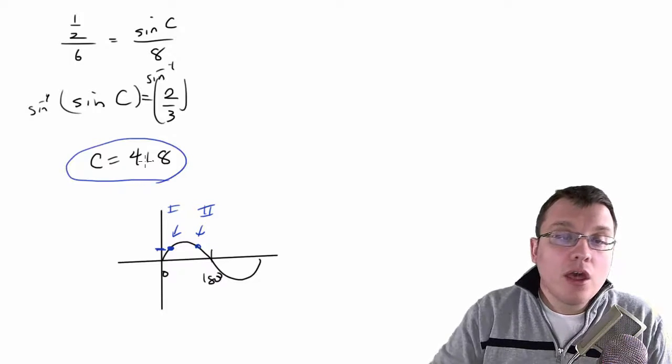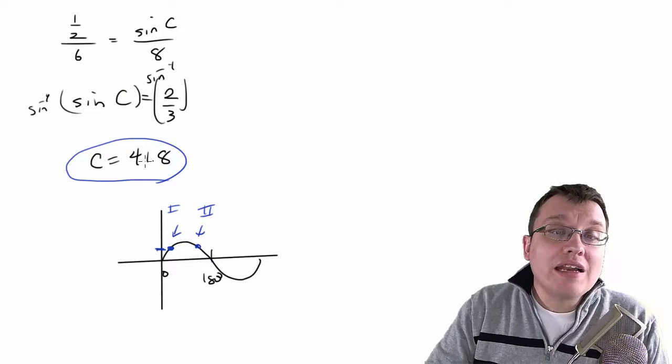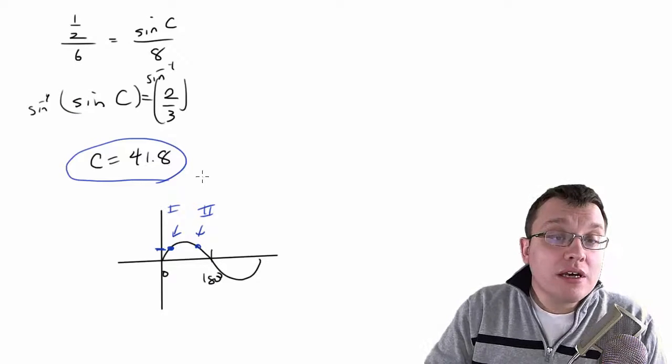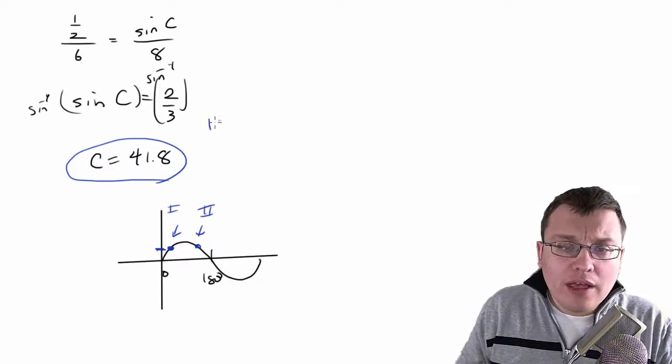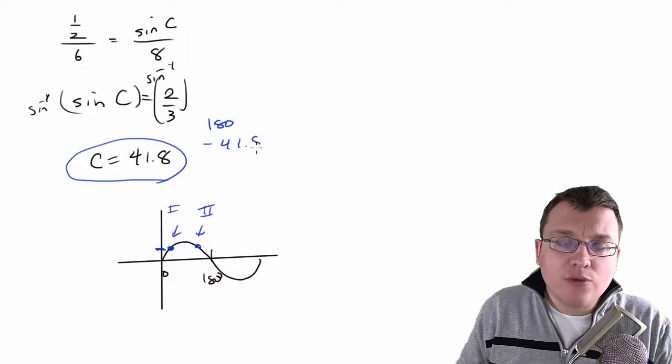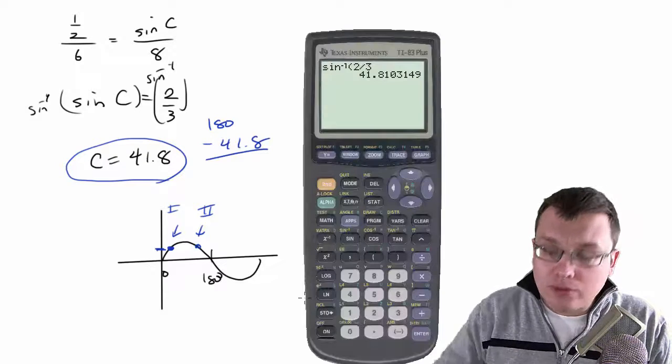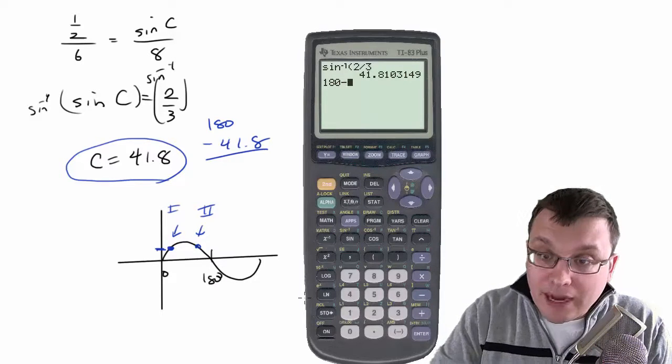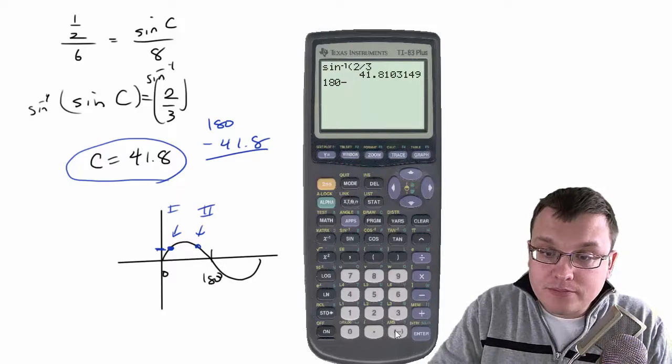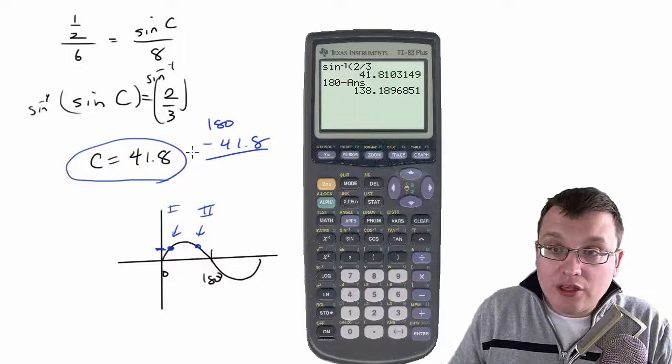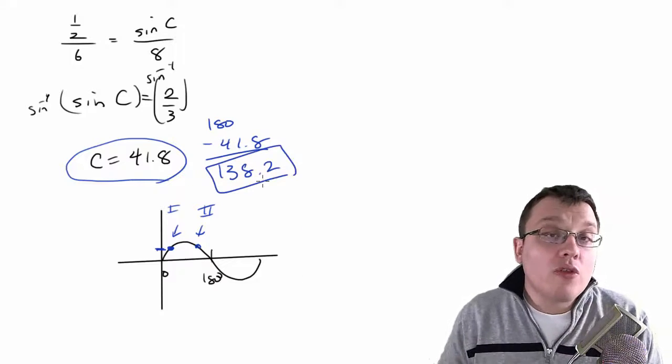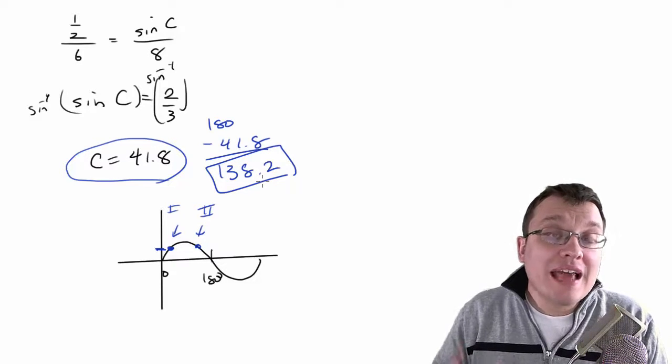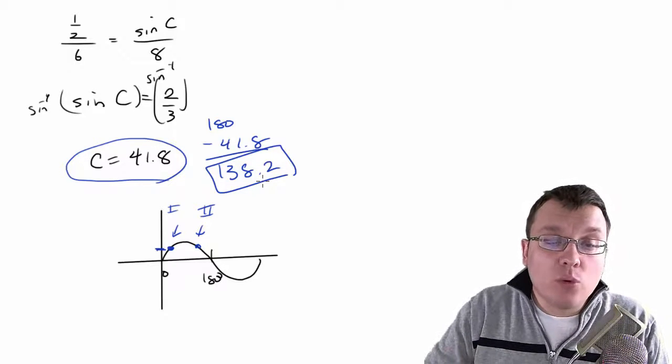So we've got 41.8. What you want to do is find the angle in quadrant two that would be equivalent to 41.8 in quadrant one. And the way you do that is you do 180 minus 41.8. So here I'm going to do 180 minus my answer. And I get 138.2. So that could be the other sine answer. But the question is, can that actually be valid? Does that actually work?